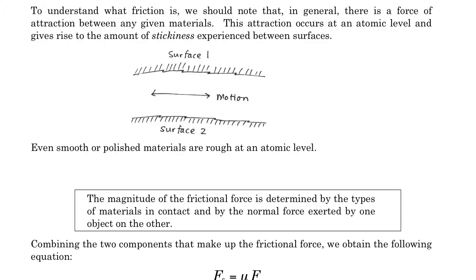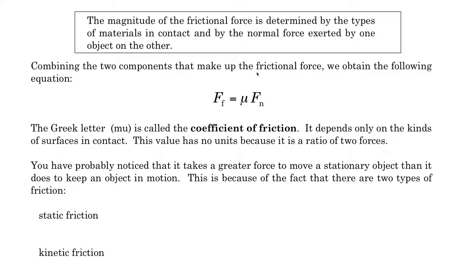The magnitude of the force of friction — how big the force of friction is — is determined by the types of materials in contact and by the normal force exerted by one object onto the other. Mu, called the coefficient of friction, depends only on the kinds of surfaces that are in contact with each other.